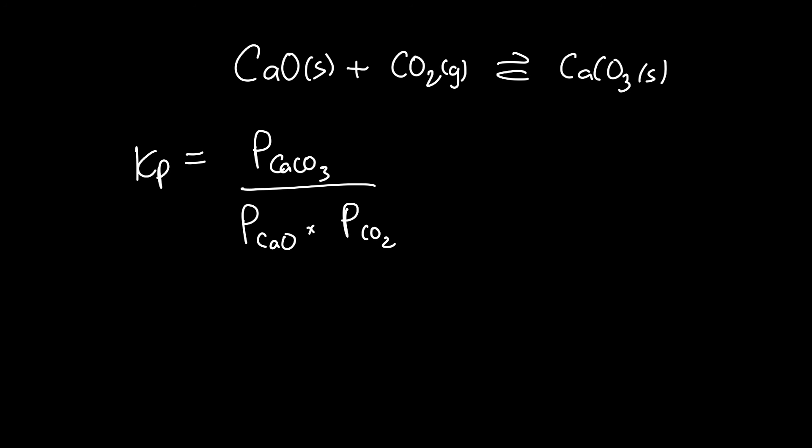However, calcium carbonate is a solid, so it has an effective pressure of 1. Calcium oxide is a solid, has an effective pressure of 1. So that means at the end of the day, the equilibrium constant is 1 over the partial pressure of carbon dioxide.